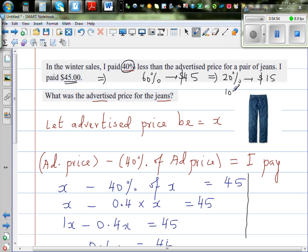And we want to find 100%. So 100% has five lots of 20%, so 15 times five is 75. So both ways we got the same answer.